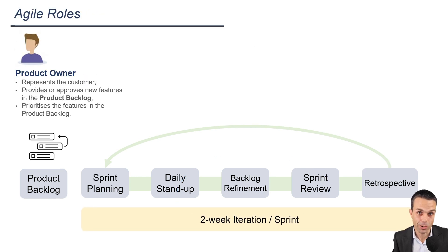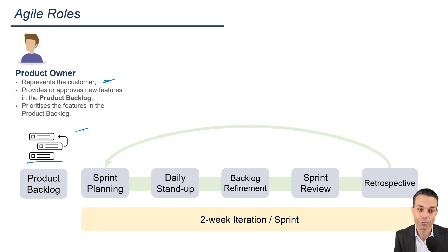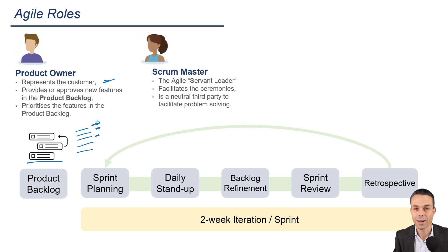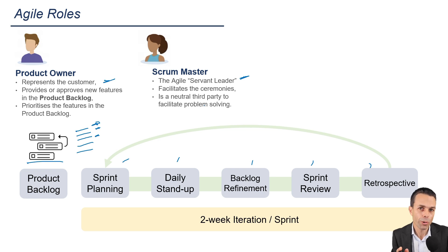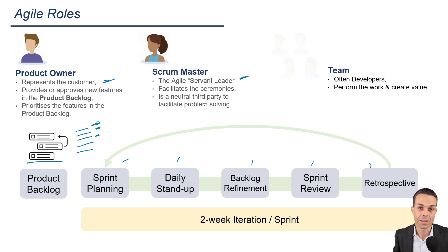What are the typical roles? First, we have our product owner. They represent the customer and provide or approve new features in the product backlog — a list of features they want to deliver — and they prioritize that list so the highest value features are always first. Then we have our scrum master. This could be a project manager role, a servant leader role, or a manager acting in the scrum master way — facilitating ceremonies, helping remove blockers, and acting as a neutral third party in problem solving.